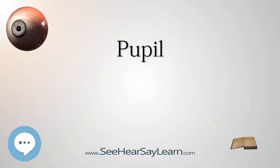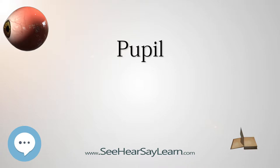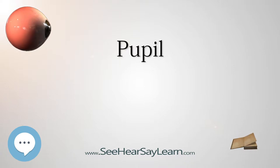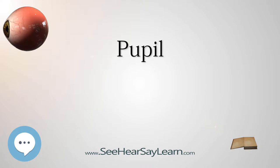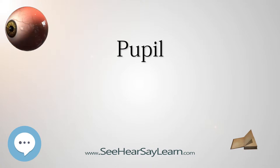The dilator pupillae, innervated by sympathetic nerves from the superior cervical ganglion, cause the pupil to dilate when they contract. These muscles are sometimes referred to as intrinsic eye muscles. The sensory pathway — rod or cone, bipolar, ganglion — is linked with its counterpart in the other eye by a partial crossover of each eye's fibers, causing the effect in one eye to carry over to the other.